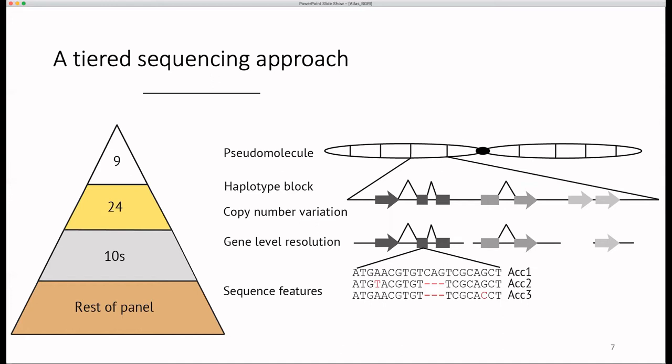The remaining accessions could then be sequenced to bronze standard with low-coverage Illumina reads, to capture the genome-wide SNP variation in the rest of the panel.